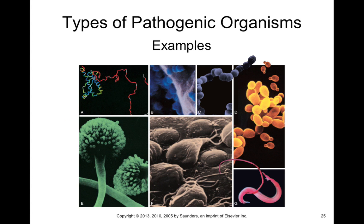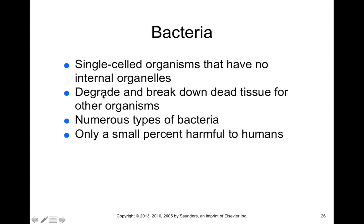For the last part of this chapter, we'll talk about the major types of infectious microorganisms. There is a variety, including fungi, protozoa, and other eukaryotes, as well as bacteria and even proteins — proteins can be infectious as well. Starting with bacteria: these are single-celled organisms without organelles, called prokaryotes. They degrade and break down dead tissue or other organisms, and there are numerous types of bacteria.